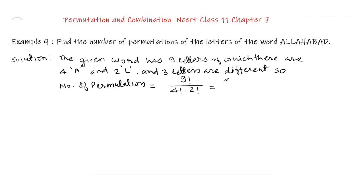This is equal to 9 multiplied by 8 multiplied by 7 multiplied by 6 multiplied by 5 multiplied by 4 factorial upon 4 factorial into 2 multiplied by 1, as factorial 2 is 2 multiplied by 1.